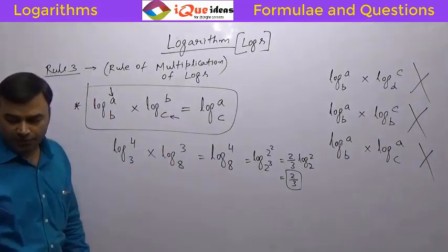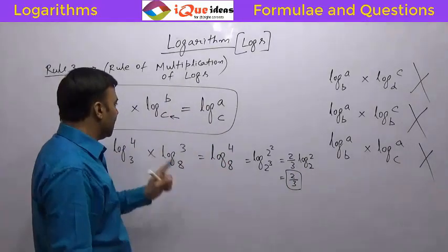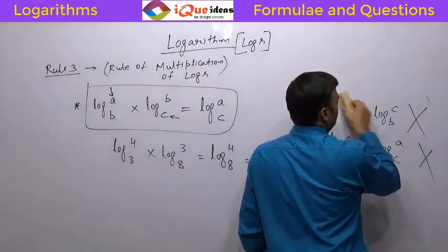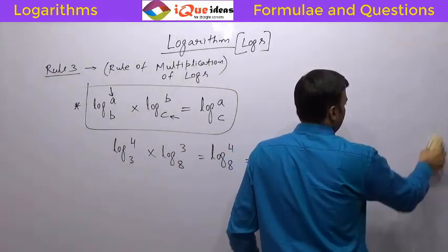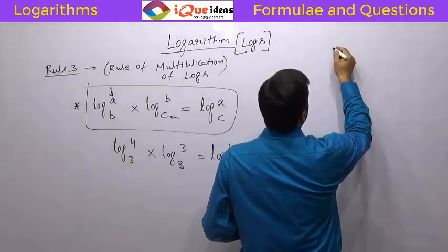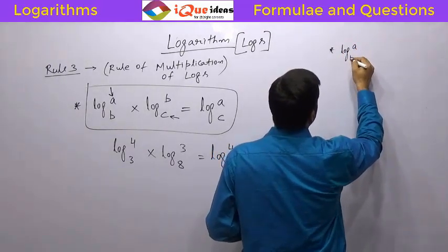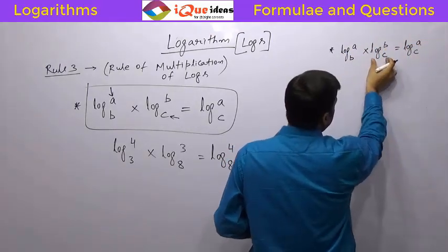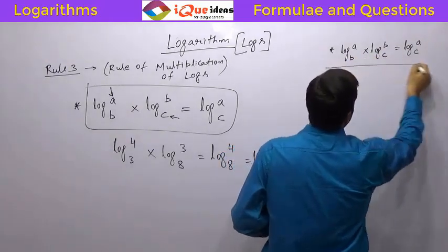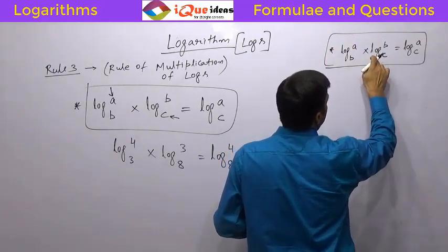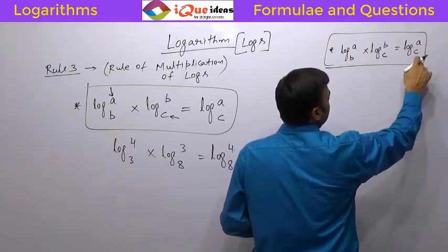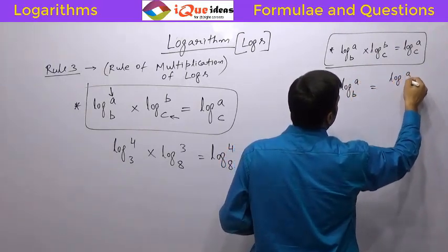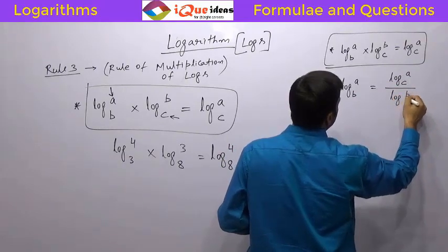So the multiplication of logs is possible only if the base in one log is the same as the number in another log. The rule is: log of A to the base B into log of B to the base C equals log of A to the base C. Sending log B to the base C to the other side, we get log A to the base B equals log A to the base C divided by log B to the base C. This is the outcome — the change-of-base formula.